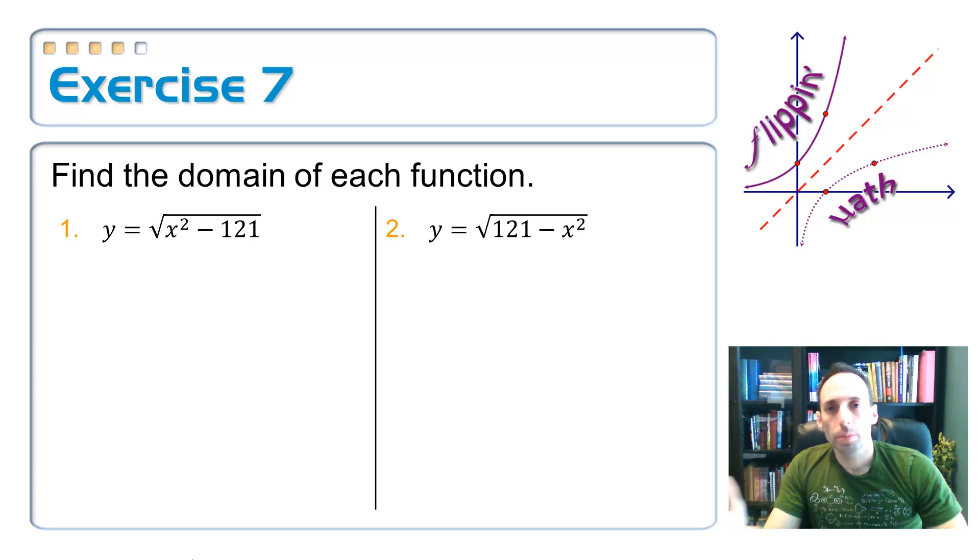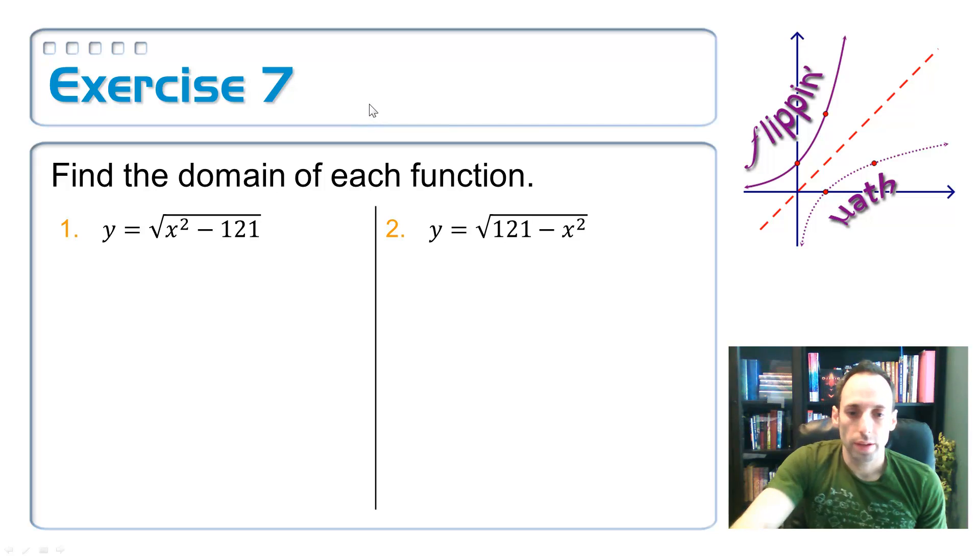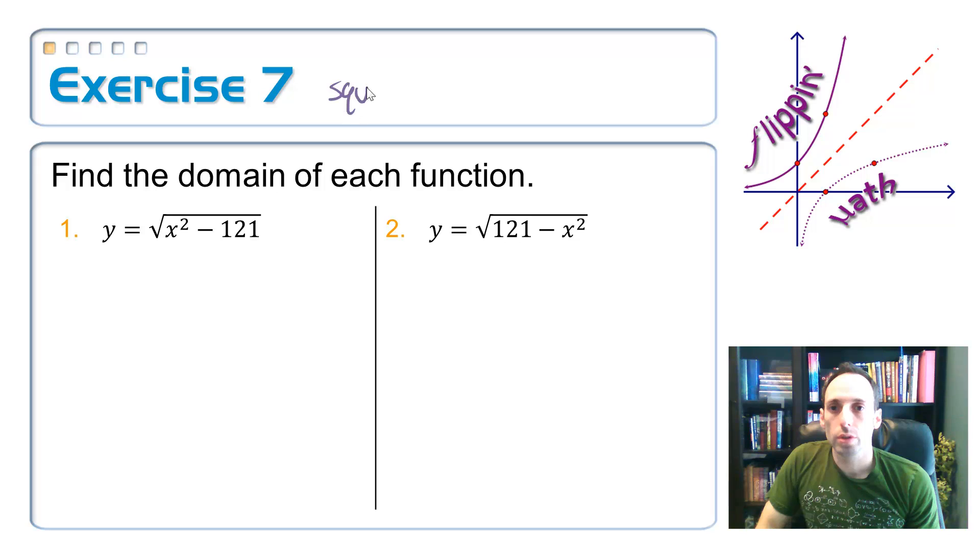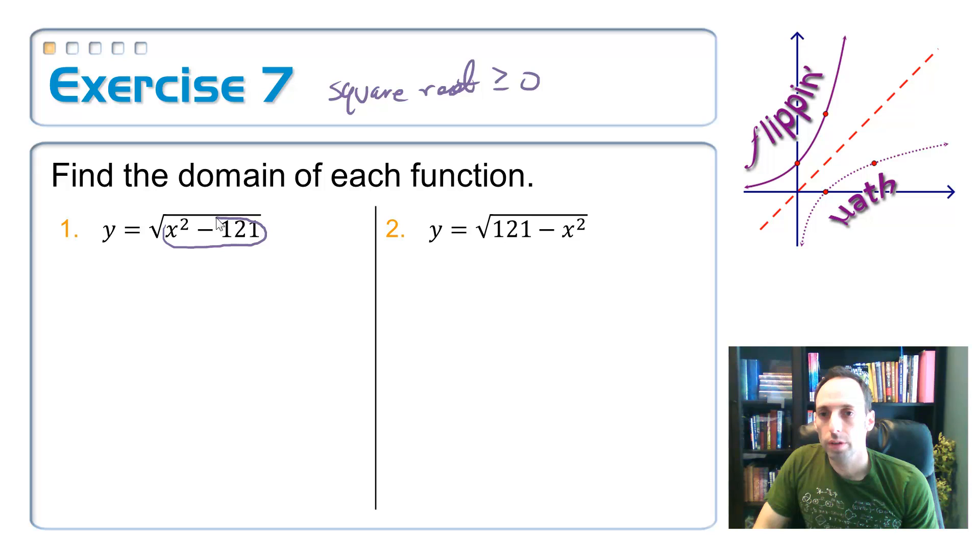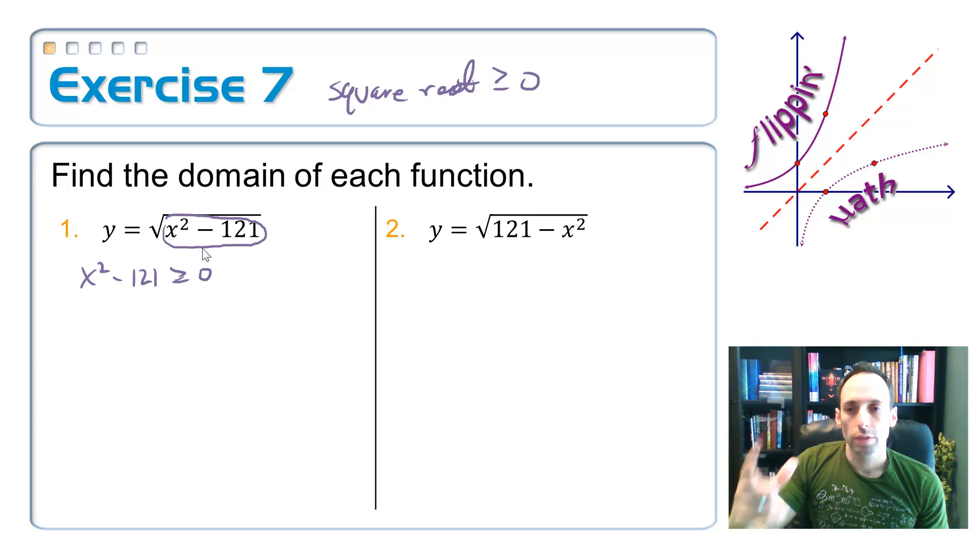Something that's going to limit it is something like a square root. Because the square root, whenever I graph it on the coordinate plane, it can't be imaginary. So the way that I keep this from being imaginary is that the square roots have got to be greater than or equal to zero. So now can you see how this is an application of what we were just doing?